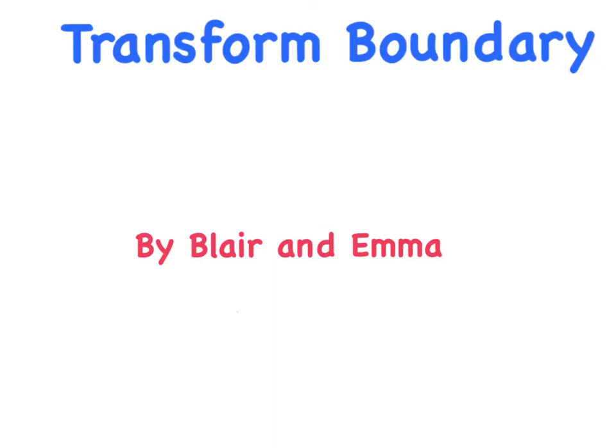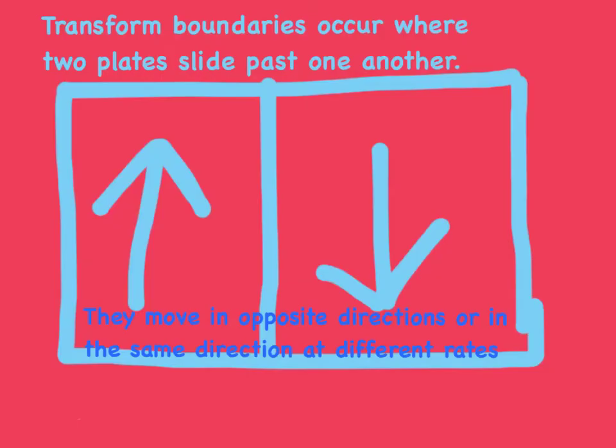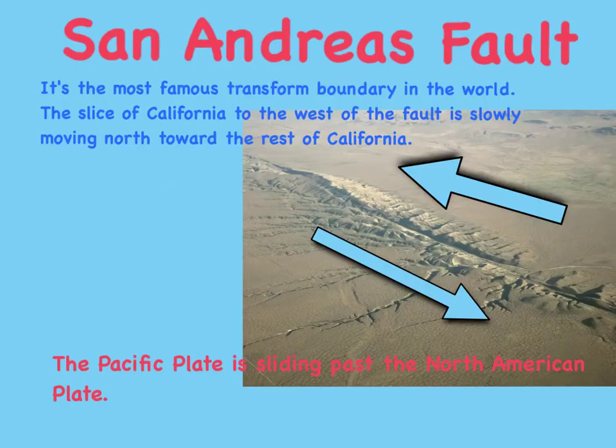Transform Boundaries by Blair and Emma. Transform boundaries occur where two plates slide past one another. They move in opposite directions, or in the same direction at different rates.